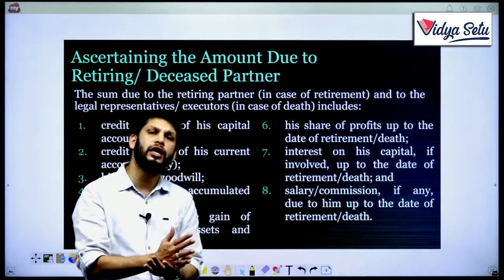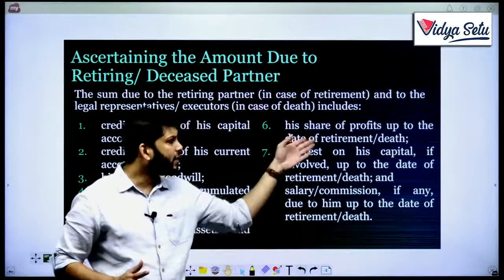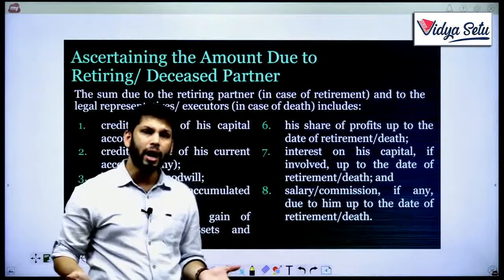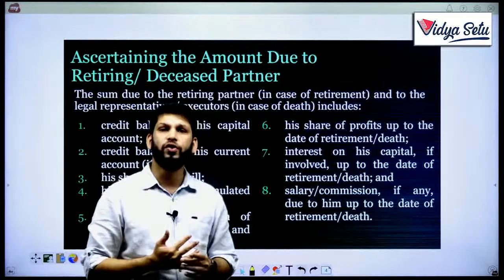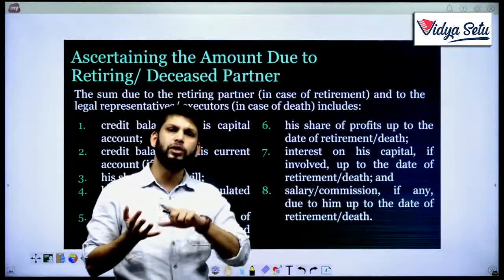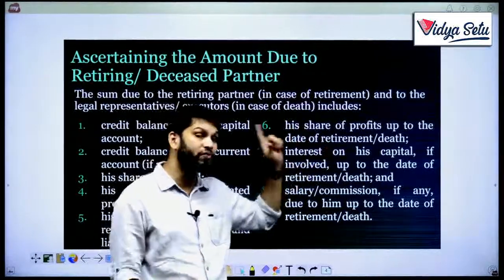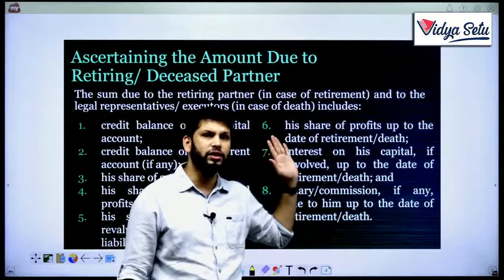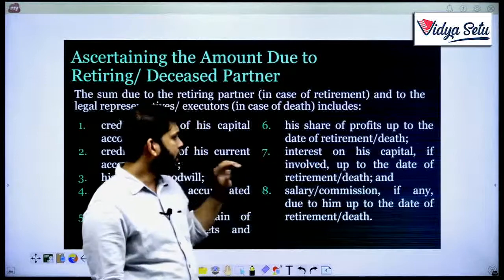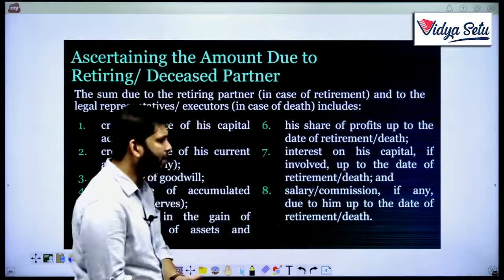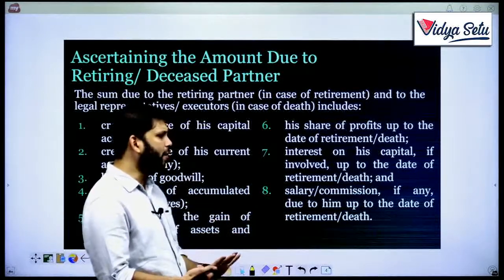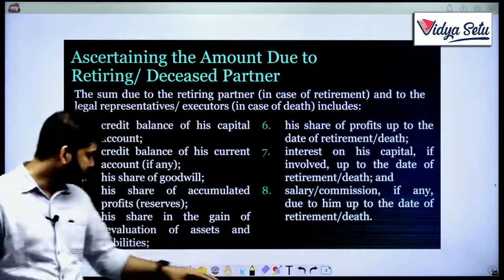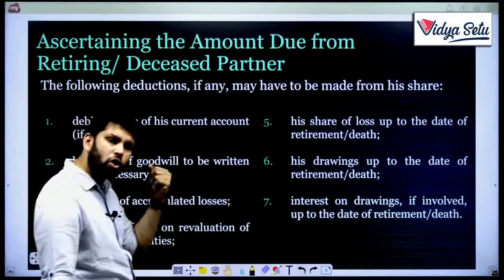Next is his share of profits up to the date of retirement or death. Generally the date of retirement is the last date of the balance sheet. But in the case of death, a person can die anytime — if he died on, say, 1st July, he worked for April, May, June — three months completely — so he should get three months' profit. That applies in the death case only. Also included are interest on capital up to the date of retirement or death, his salary, commission, and any amount due to him up to the date of retirement.